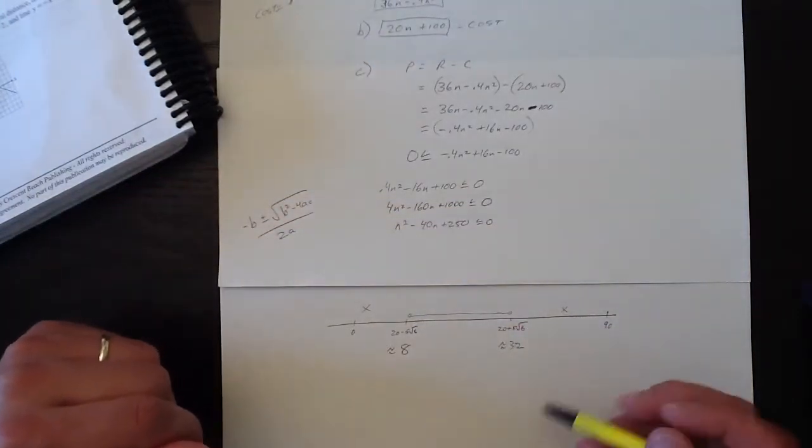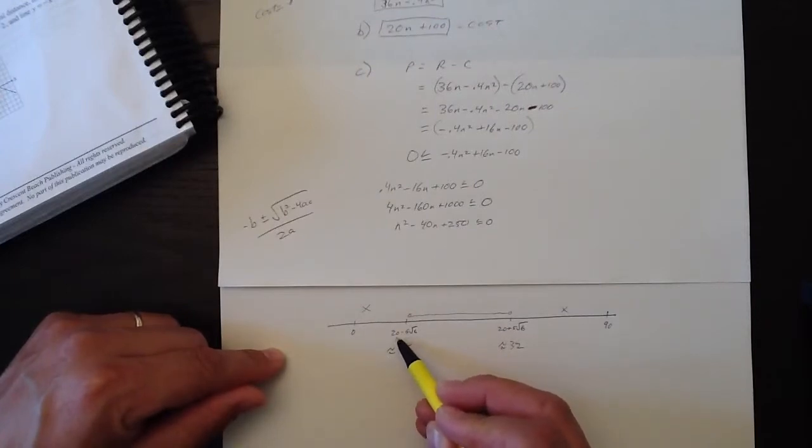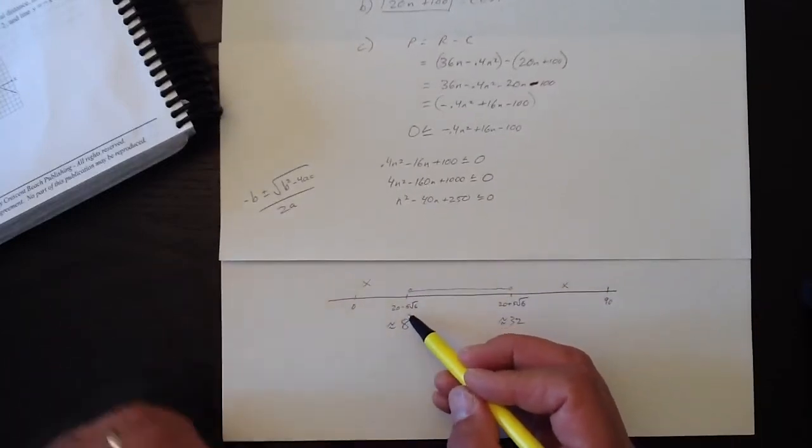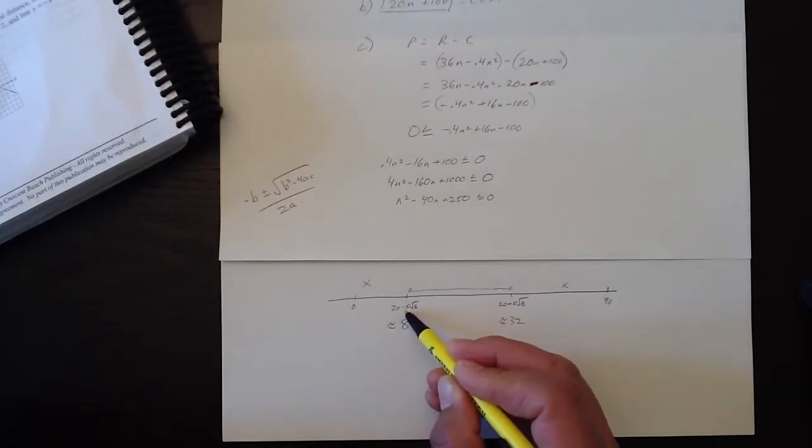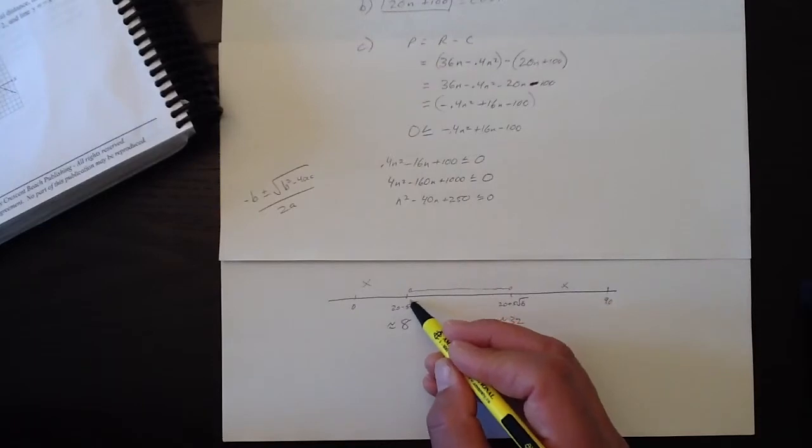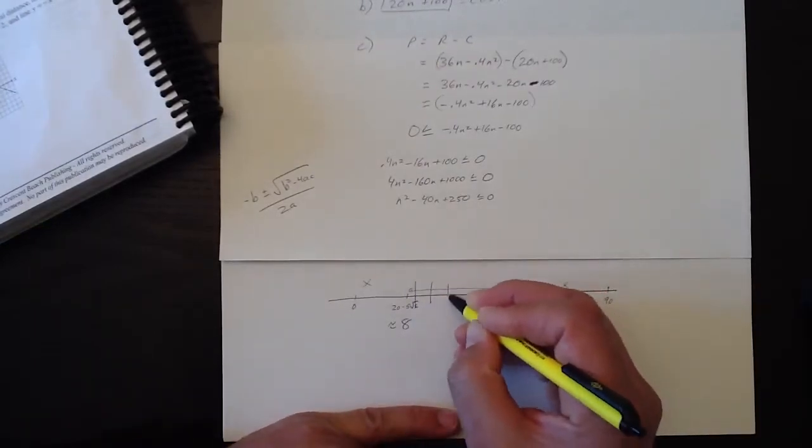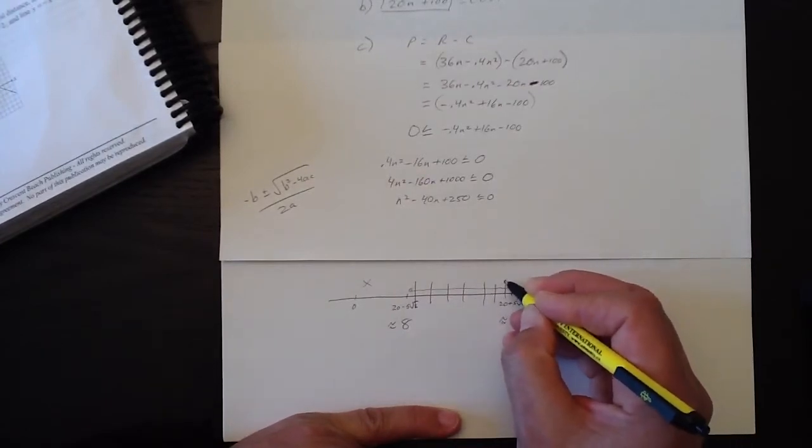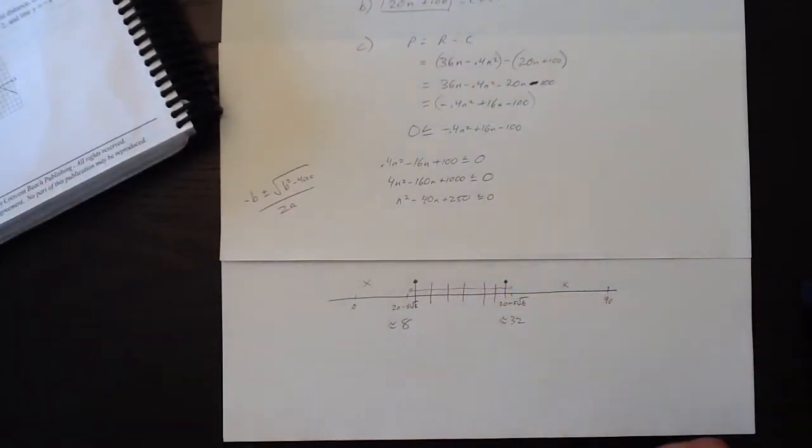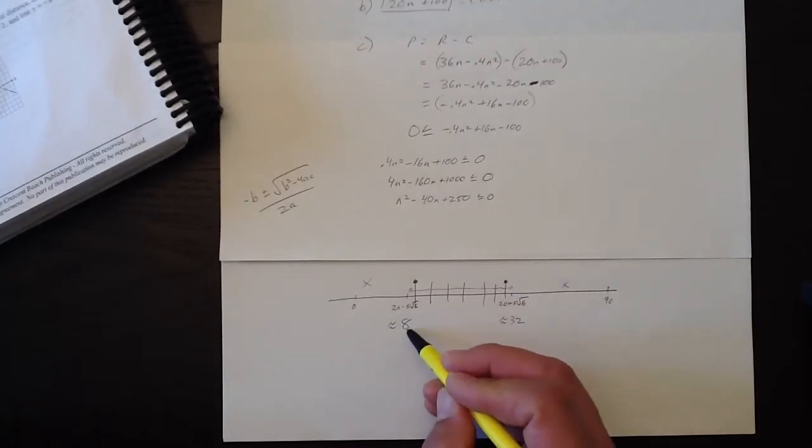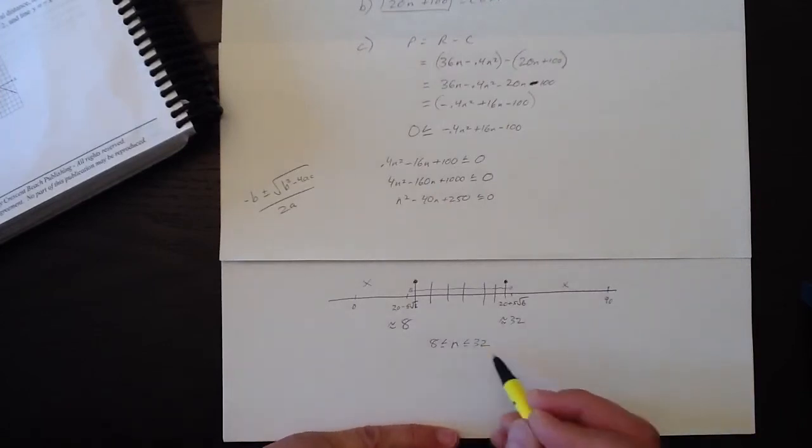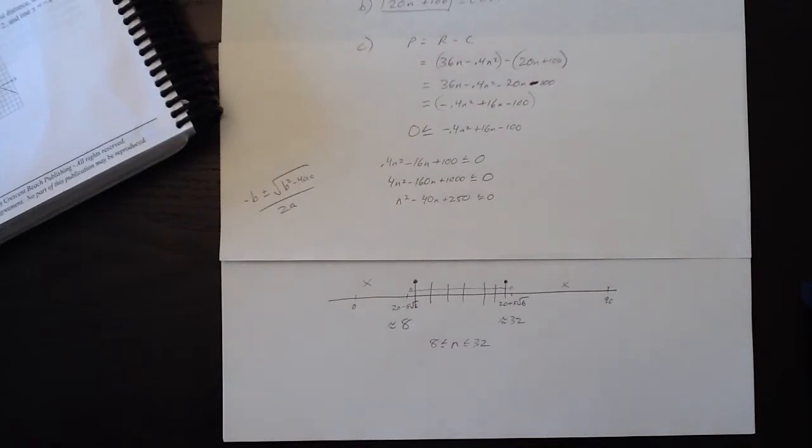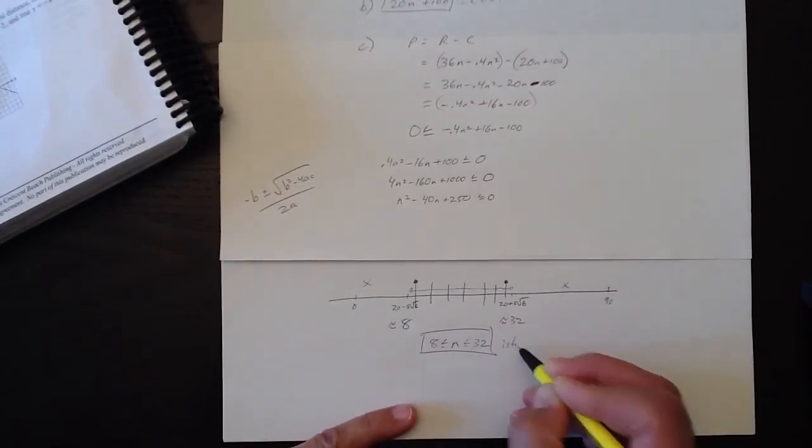A point that's worth making is that you cannot produce 20 minus 5 root 6 units. You can't sell 20 minus 5 root 6 units. You can only produce whole numbers of units. So, while I don't know what this is, if this was, let's say, 7.9 or something, then we'd have to go up to 8. If it was 8.2, we'd have to go up to 9. Because we can only sell whole units. So, if these were the whole units here, then it would be this amount to this amount, whatever the whole units are inside. And because I don't have a calculator, I can't calculate 20 minus 5 root 6. But it's going to be somewhere around 8 to 32.